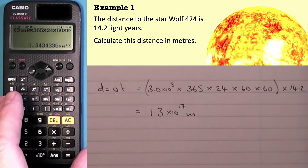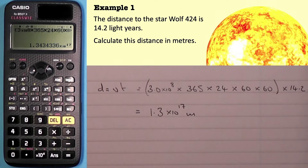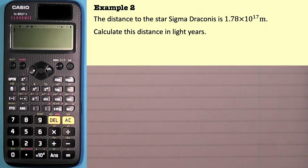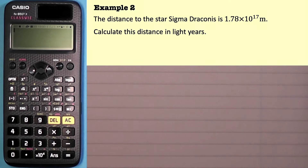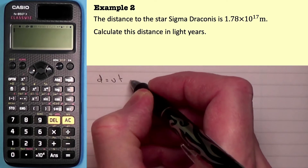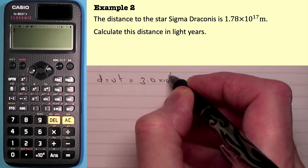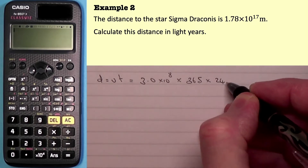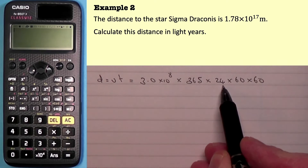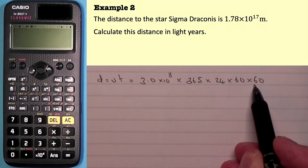That was example number one. Now let's look at example number two. The distance to the star Sigma Draconis is 1.78 times 10 to the power of 17 meters — calculate this distance in light years. In an exam, the first thing I'd do is work out the distance of one light year: distance equals speed times time, which is 3.0 times 10 to the power of 8, times 365 times 24 times 60 times 60.